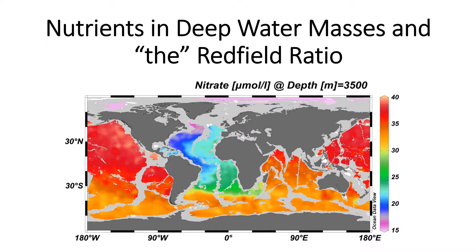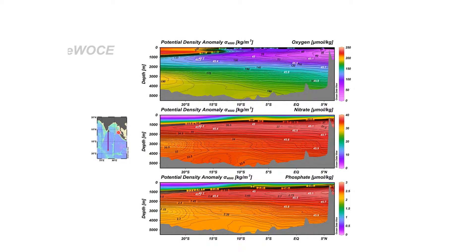This practical uses a section in the Indian Ocean from south to north. You're given six of these sections. The potential density anomaly is shown in white contours, and the parameter in the colored background is oxygen, nitrate, etc., shown on the right with color scales. The black contours and the color scales are the same.